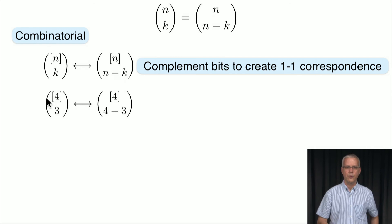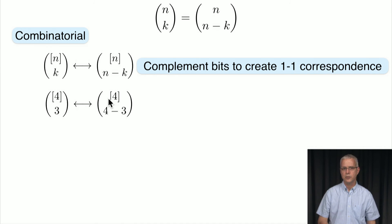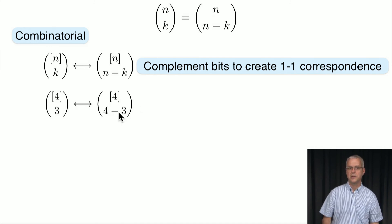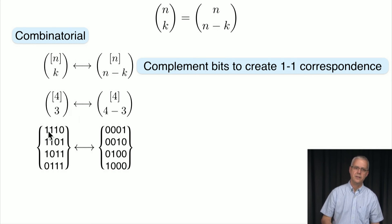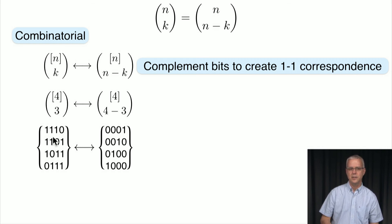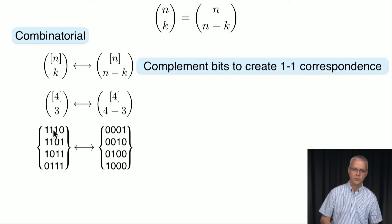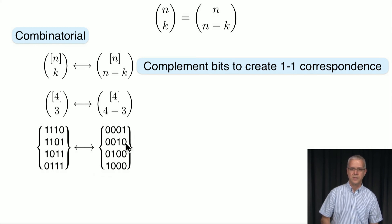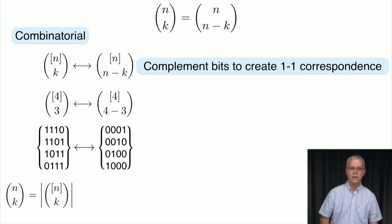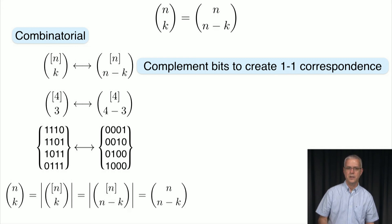For example, consider all four-bit strings with three 1s — we want to show this is in one-to-one correspondence with all four-bit strings with a single 1 (four minus three). The mapping is: take a binary sequence of length four with three 1s and complement the bits. So 1,1,1,0 maps to 0,0,0,1. This mapping is one-to-one, so these two sets have the same cardinality — meaning 4 choose 3 equals 4 choose 1. In general, n choose k equals n choose n minus k.